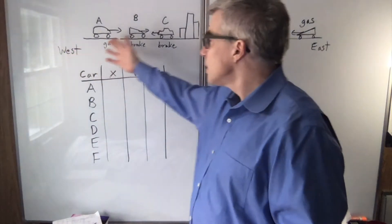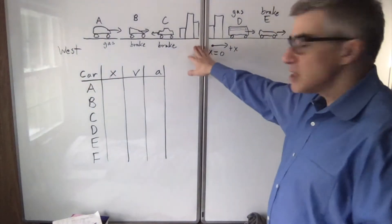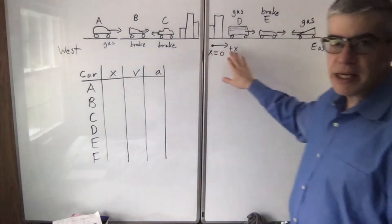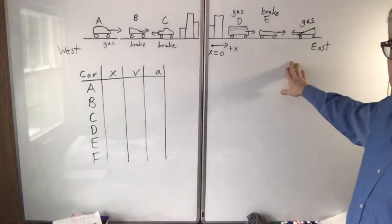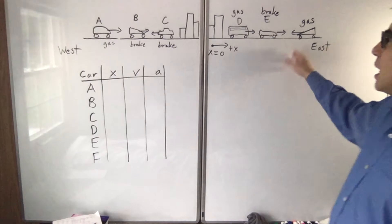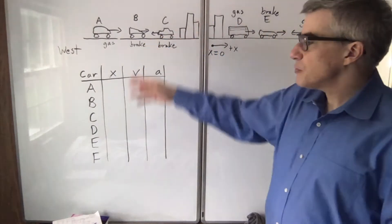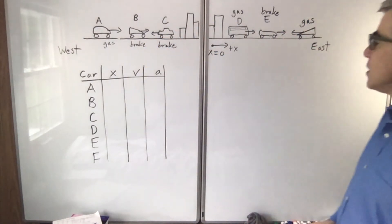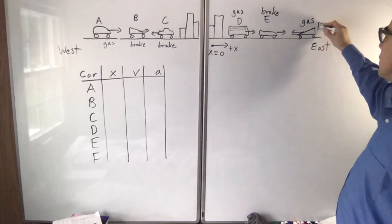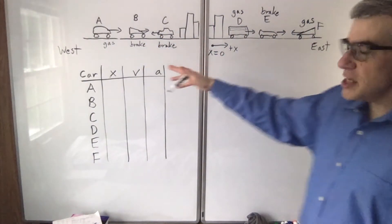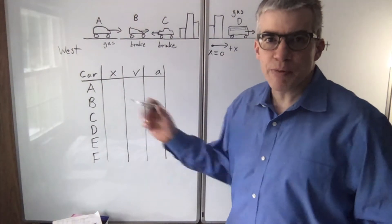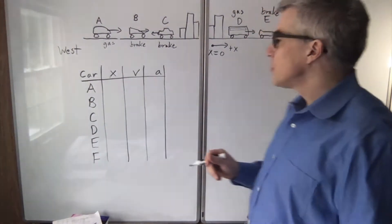Imagine a town. The middle of town is x equals zero and east is the positive x direction. I drew six different cars here — a, b, c, d, e, f — and I said each one was either hitting the gas or the brake, and I pointed which way they're going.